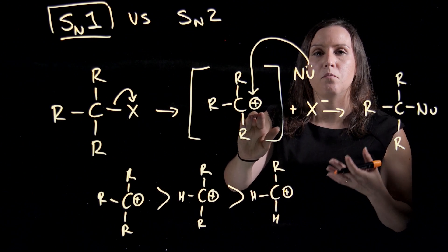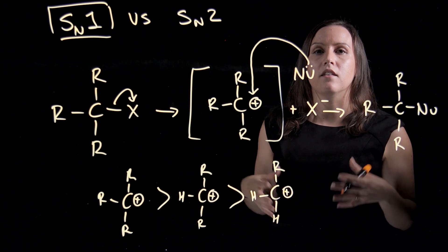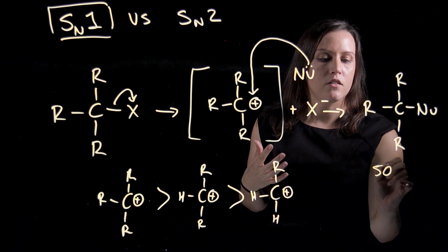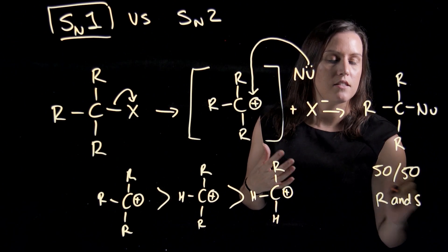So we have this carbocation being produced, the nucleophile can come in from the front or the back. So we will get a 50-50 mixture of R and S for our product.